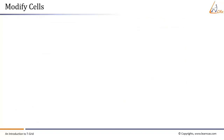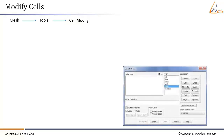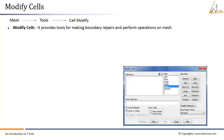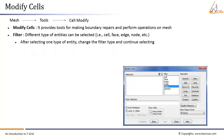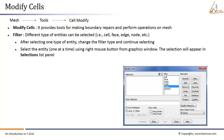The Tet Improve operation enables automatic mesh improvement, while the Modify Cells operation enables manual mesh improvement. Go to Mesh > Tools > Cell Modify to open the Modify Cells window. It provides tools for making boundary repairs and performing mesh operations. The Filter option allows selection of different entity types such as Cell, Face, Edge, and Node. After selecting one type of entity, change the filter type and continue selecting. Select entities one at a time using the right mouse button in the Graphics window; selections appear in the Selections List panel. Use different operation buttons to perform desired modifications.